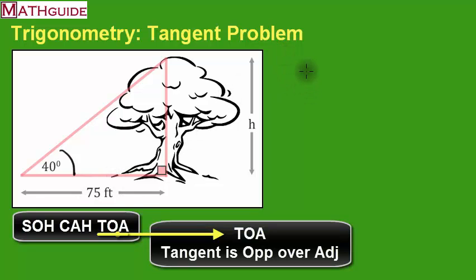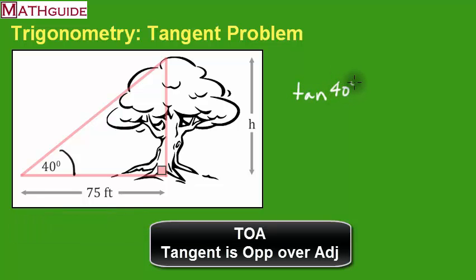Over here on the right side, I'm going to start to set up the mathematics to this. Now that we know that this is a tangent problem, I'm going to take the tangent of the angle and set up the ratio. The ratio is opposite, that's our height, and our adjacent side, which is 75 feet.